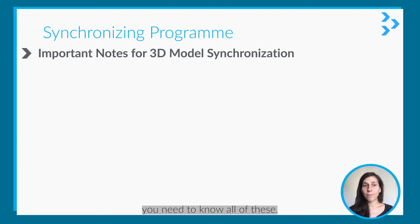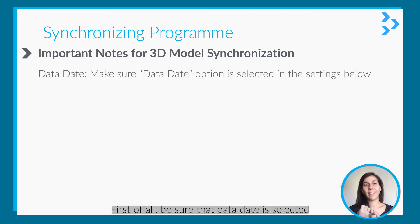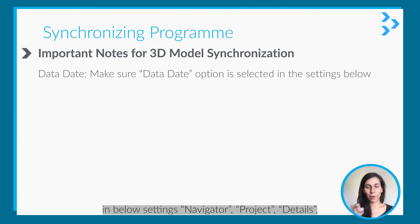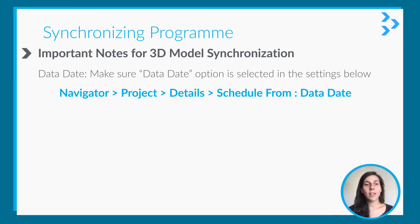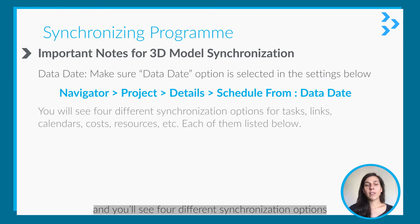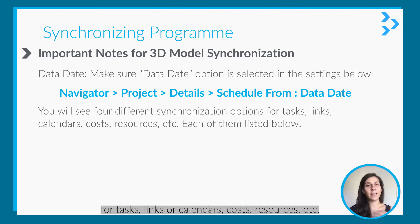In the program part, there are important settings to know. First, be sure that the Data Date option is selected in the below settings. Navigate your project details schedule from Data Date — that's really important. You will also see four different synchronization options for tasks, links, calendar, cost, resources, etc.